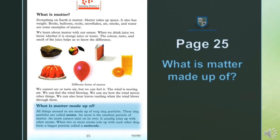An atom cannot exist on its own. Atom itna chota hota hai ke woh akela nahi reh sakta. It usually joins up with other atoms — yeh aamooman dousre atoms ke saath judkar ya milkar rehta hai. When two or more atoms join up — jub 2 ya 2 se ziyadha atom apas mein judtay hain — with each other, they form a bigger particle, yeh ek bada tukda bena detay hain, called molecule, jisay molecule kehtay hain.